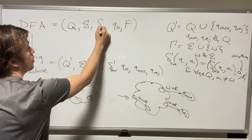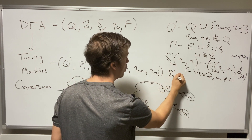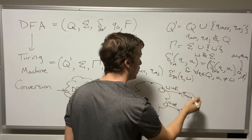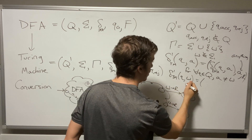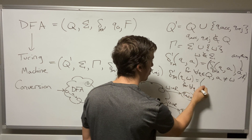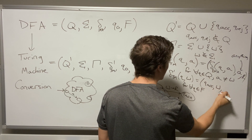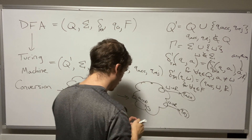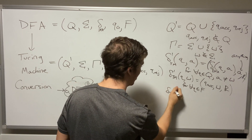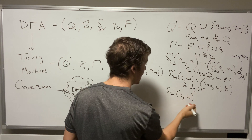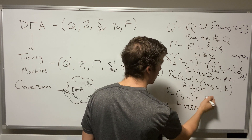To complete the transition function: for all q in F (the final states), on the blank symbol, the Turing machine transitions to q_accept, writes blank, and moves right. For all q not in F, on the blank symbol, the Turing machine transitions to q_reject. This holds for all q in the original state set Q, since the Turing machine doesn't define transitions out of the accept and reject states.